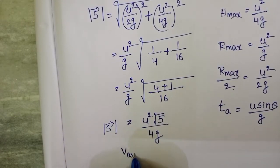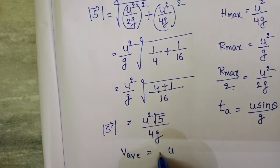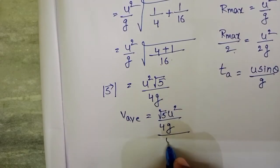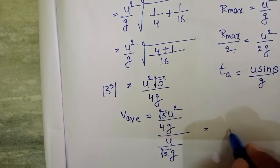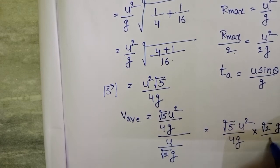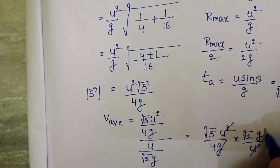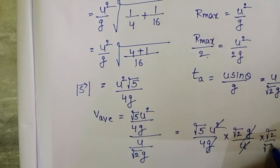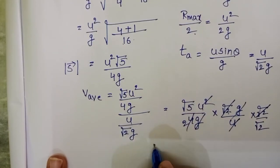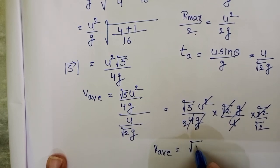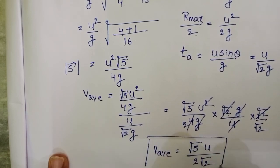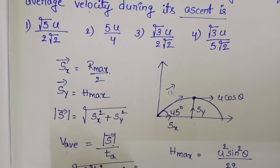The magnitude of average velocity equals displacement divided by time of ascent: [√5 · u²/(4g)] divided by [u/(√2 · g)]. This simplifies to √5 · u²/(4g) multiplied by √2 · g/u. The u and g cancel, leaving √5 · √2 · u / 4 = √10 · u / 4, which simplifies to √5 · u / (2√2). The first option is correct.